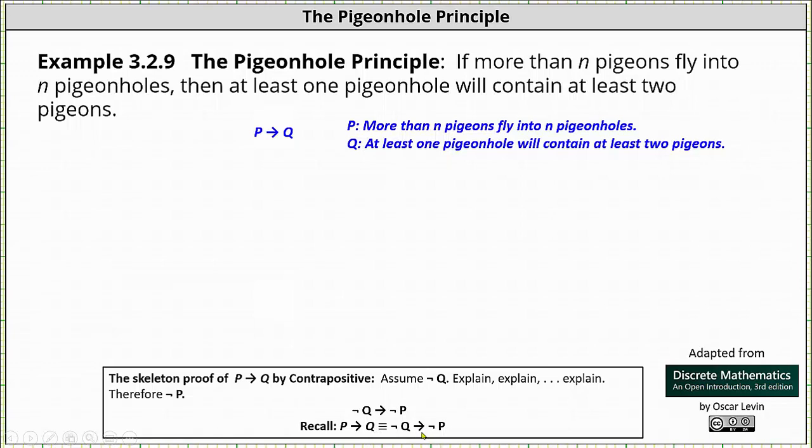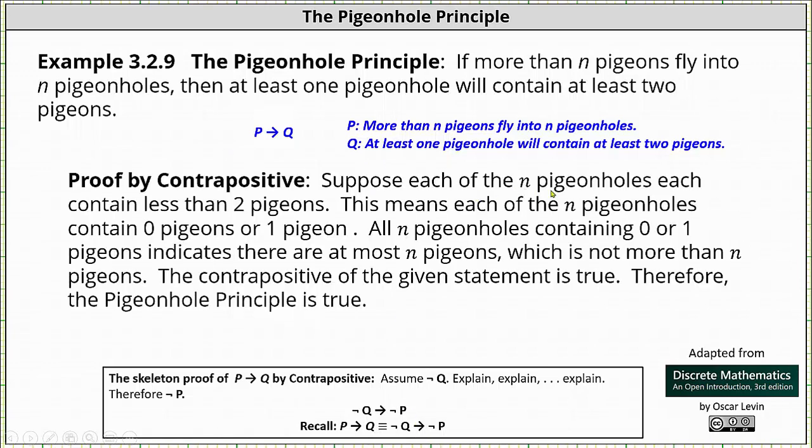We begin the proof by supposing the statement not Q. Suppose each of the n pigeonholes each contain less than two pigeons. This means each of the n pigeonholes contain zero pigeons or one pigeon.